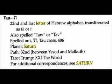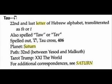Okay, here's Tau, the 22nd letter of the Hebrew alphabet, translated as T, also spelled T or Tav, like the other article said. Spelled out, that symbol is IP — or the Tau cross, which is the X that you see for Saturn. And here it designates it as the planet Saturn, with additional correspondences to Saturn.